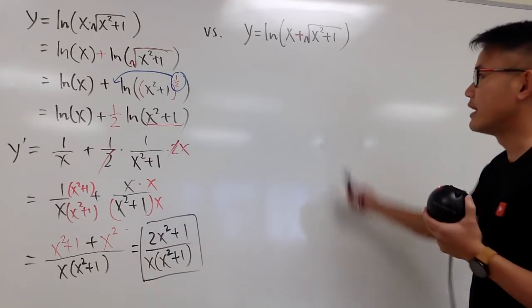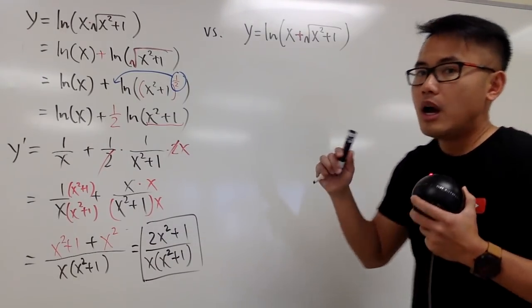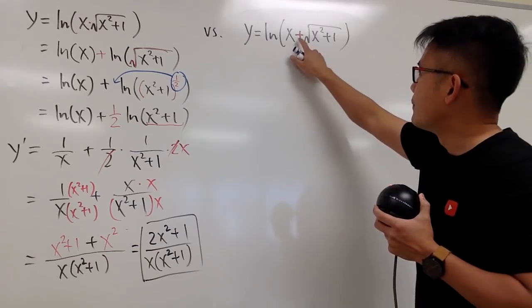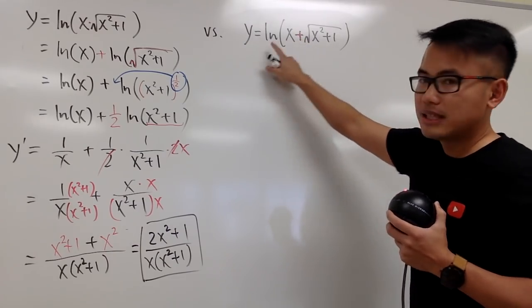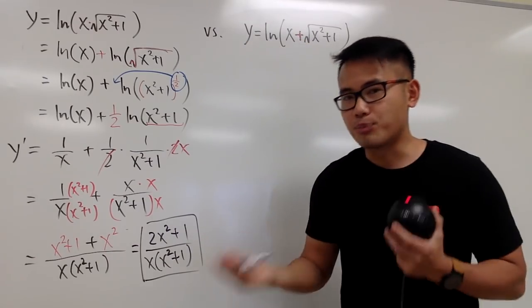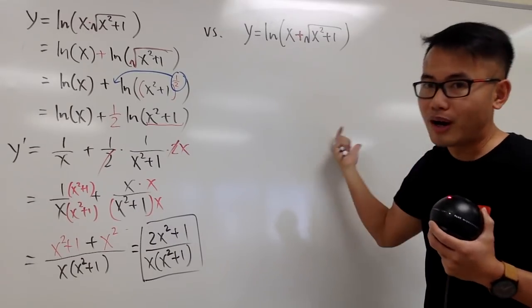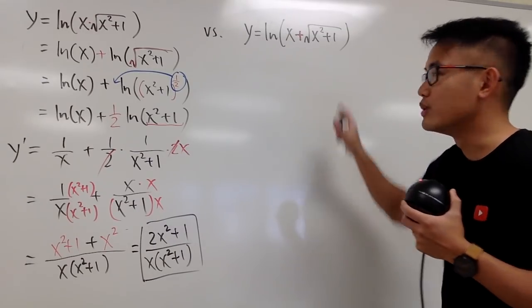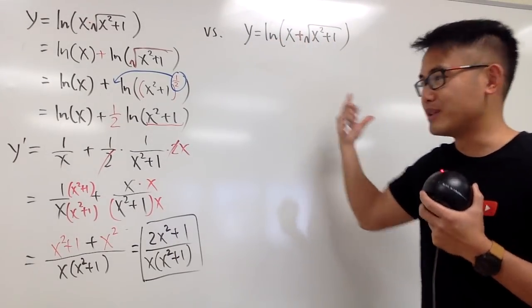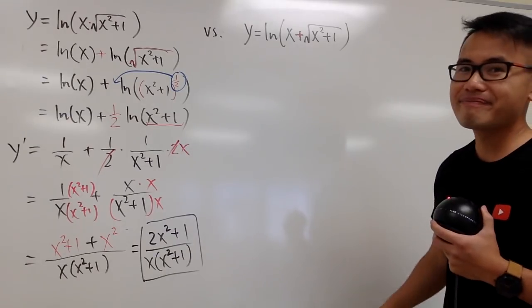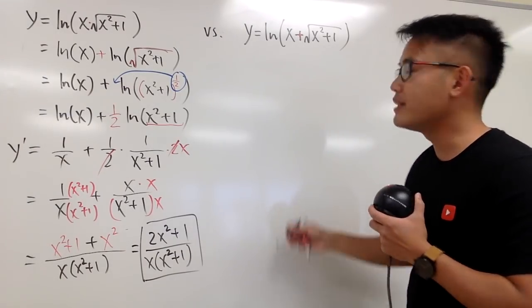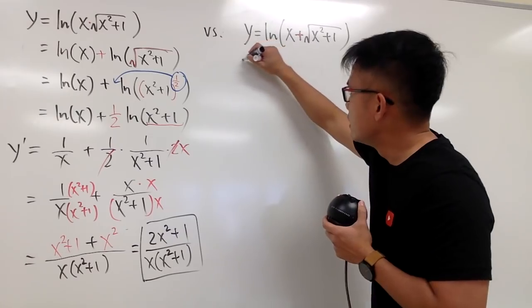Now let's take a look at the second one. Unfortunately, when we have addition of two things inside of the ln, there's no property that lets us break this apart. So to differentiate this, we just have to deal with it. This is going to be mainly a chain rule question, and we'll just go ahead and proceed.